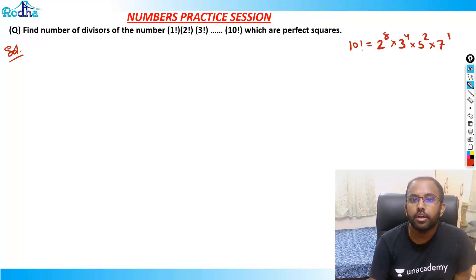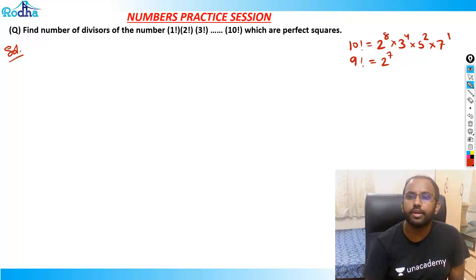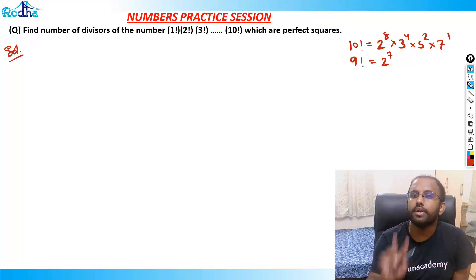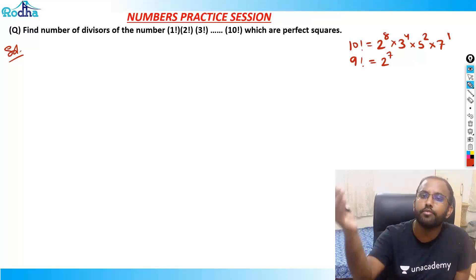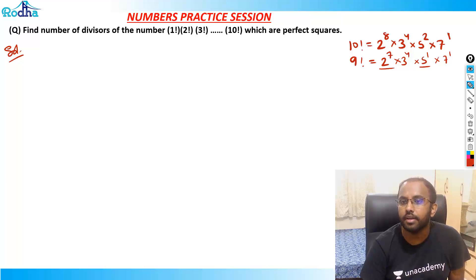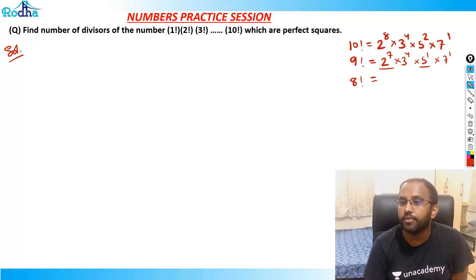Now, what is 9!? From 9! to 10!, only 10 is multiplied, so only 2 and 5 change. So 9! has 2^7, and 3 and 7 remain same. From 8! to 9!, only 9 = 3^2 is multiplied, so only 3's power changes — a 3^2 change happens. From 7! to 8!, only 8 = 2^3 is multiplied, so 8! has 2^4 × 3^2 × 5^1 × 7^1.